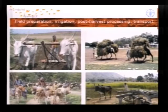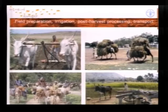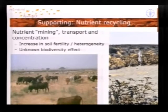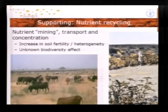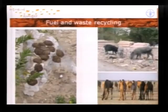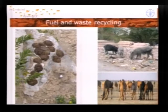Looking in more detail at ecosystem services, livestock supports crop agriculture from field preparation to post-harvest transport in many developing countries. It provides nutrient cycling across landscapes, with grazing in one part and depositing manure in other parts, creating spots of soil fertility and spatial heterogeneity that are important for flora and fauna. Livestock also recycles all kinds of waste and transforms them into milk, products, fuel, and manure.